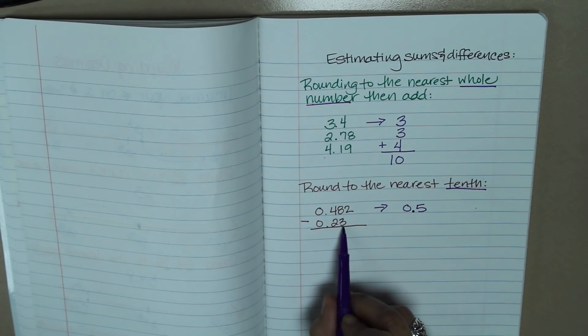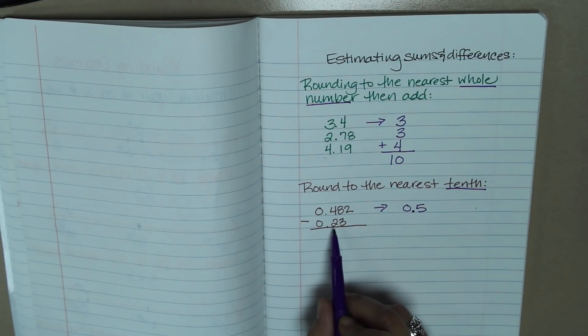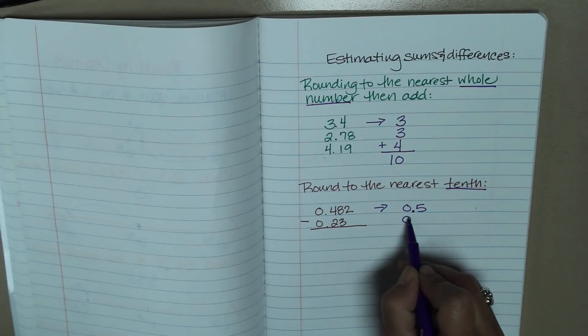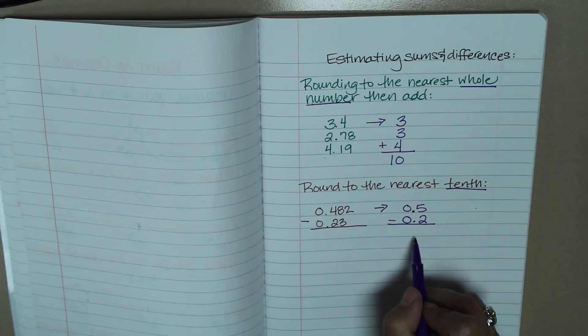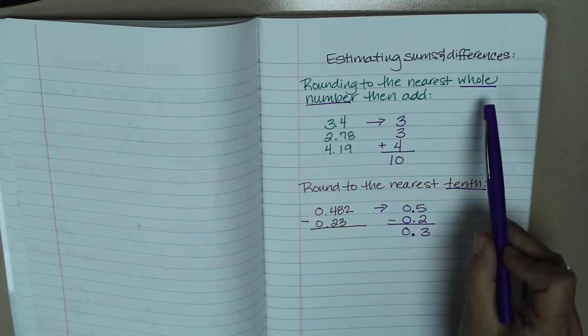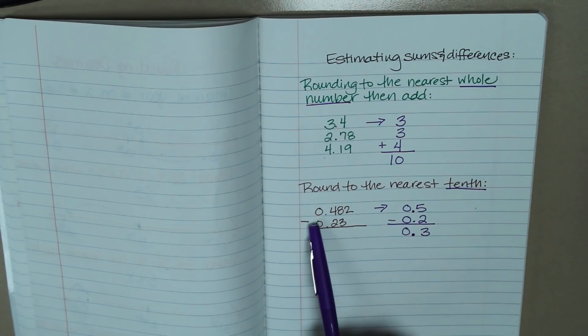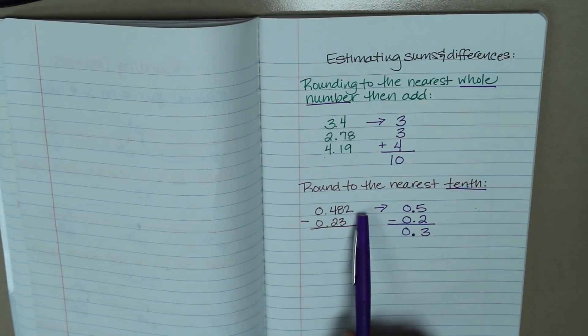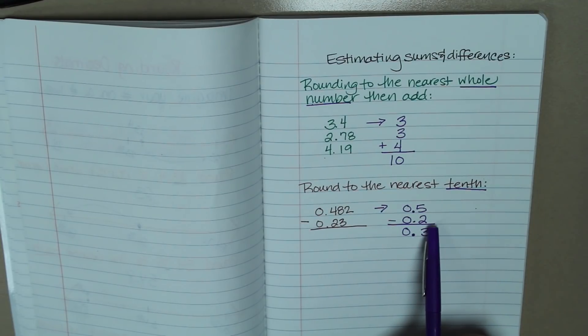And then if I look at this, the hundredth spot is a three. So I know that that is lower than five, and that means the two stays the same. And now I can easily subtract my numbers. Remember, I'm going to need to drop down my decimal, and then five minus two is obviously three. So the key thing that you need to remember is what it's asking you to round to. And I can easily estimate that the 482 thousandths is closest to five tenths, and 23 hundredths is closer to two tenths.